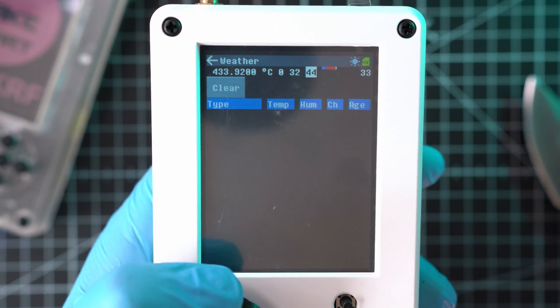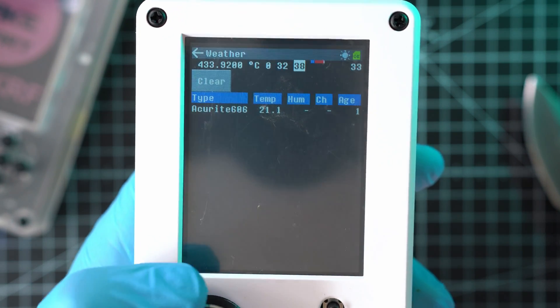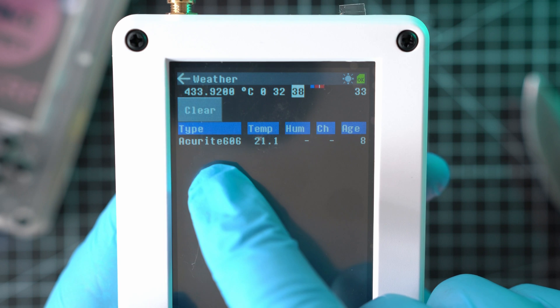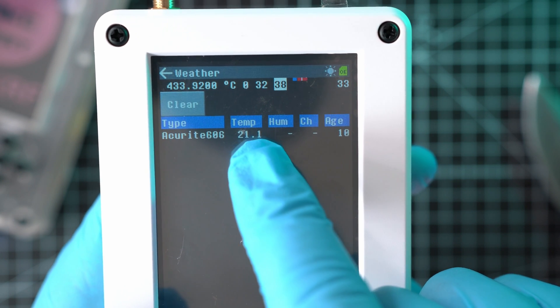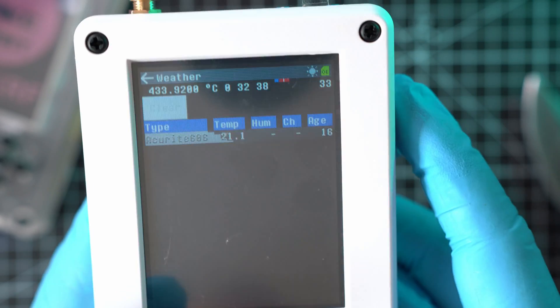And we'll adjust settings until I see a hit. Boom. Acurite 606 sensor just transmitted temperature of 21.1 degrees Celsius. It doesn't measure humidity nor display channel and transmission happened 13 seconds ago.